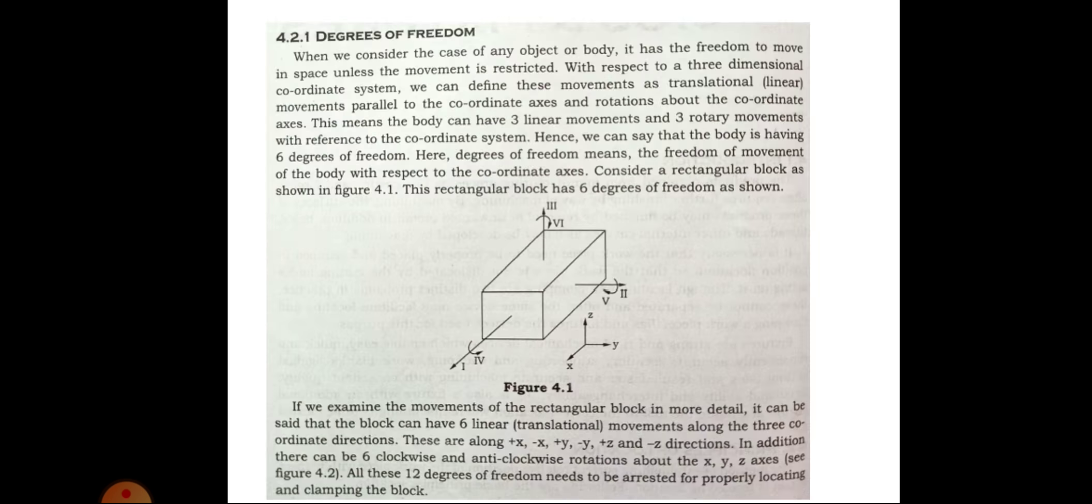Next, degrees of freedom. When we consider the case of any object or body, it has the freedom to move in space unless the movement is restricted. With respect to a three-dimensional coordinate system, we can define these movements as translational, that is linear movements parallel to the coordinate axis, and rotations above the coordinate axis. This means the body can have three linear movements and three rotary movements with reference to the coordinate system. Hence, we can say that the body is having six degrees of freedom.